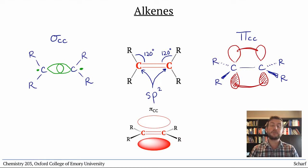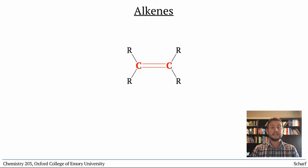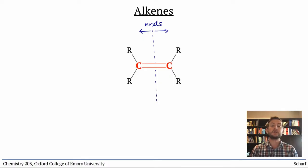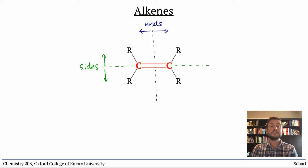Unlike in functional groups that contain only sigma bonds, alkenes have restricted rotation around the C-C double bond, so the relative positions of their substituents are fixed. When discussing alkenes, we often refer to the ends of the alkene — two substituents attached to the same carbon are at one end, while the two groups on the other carbon are at the other end. Alternatively, we can talk about the sides of an alkene: two groups on different carbons pointed in the same general direction are said to be on the same side.